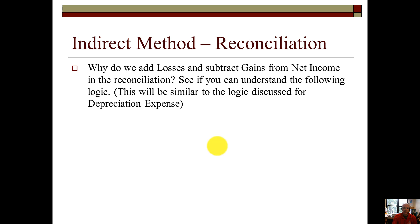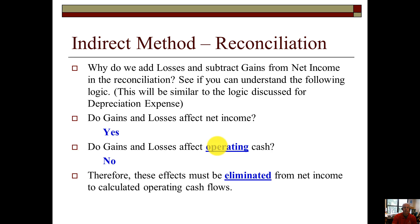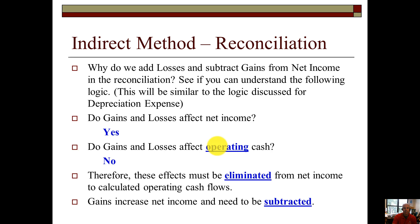Why do we add losses and subtract gains from net income in the reconciliation? Gains and losses affect net income, but do not affect operating cash. Therefore, their effects must be eliminated. Gains increase net income just like revenues and need to be subtracted to eliminate them. Losses decrease net income just like expenses — just like depreciation expense — so we add them back. To eliminate gains, we subtract them. To eliminate losses and expenses, we add them.